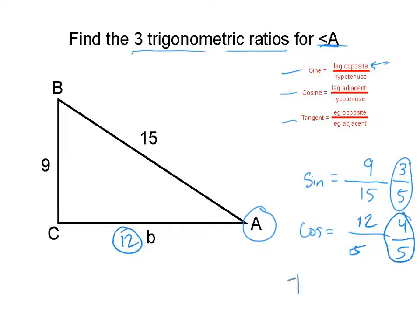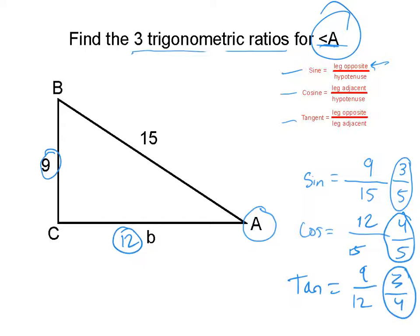There's our cosine. And then our tangent — notice these are just ratios comparing one side to the other. Sine, cosine, and tangent are comparisons of two sides of a right triangle. Tangent is leg opposite over leg adjacent. We're doing angle A, so opposite is 9 and adjacent is 12. The tangent, if we reduce that, is 3 over 4. There are our three trigonometric ratios for angle A.